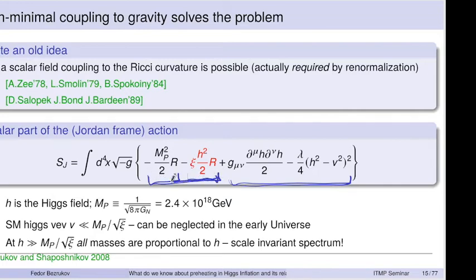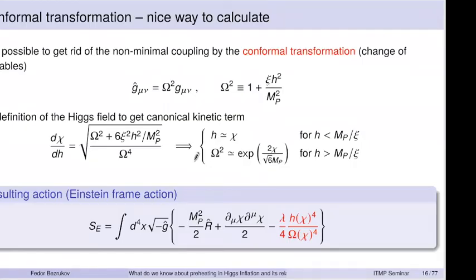There is one key observation: looking at the pair of terms, one can see that effectively what one could call the Planck mass — the coefficient in front of the Ricci scalar R — becomes M_Pl² + ξh². At large values of the field, the Planck mass effectively becomes proportional to the Higgs field h, and all other mass scales in the model become proportional to the same field. So one expects everything to be scale-invariant, which makes this a promising idea.